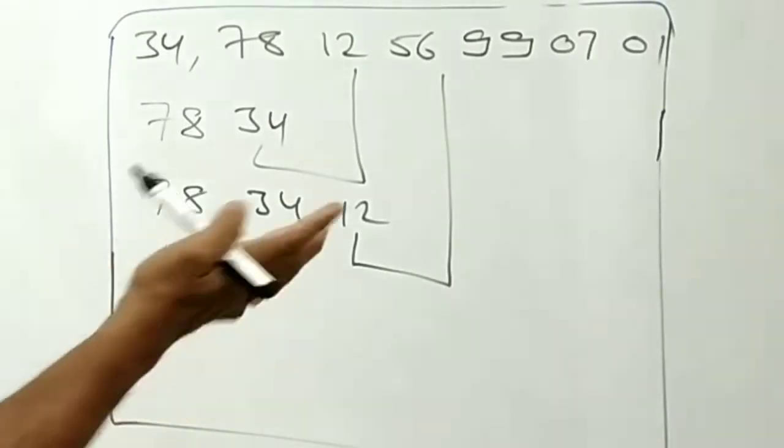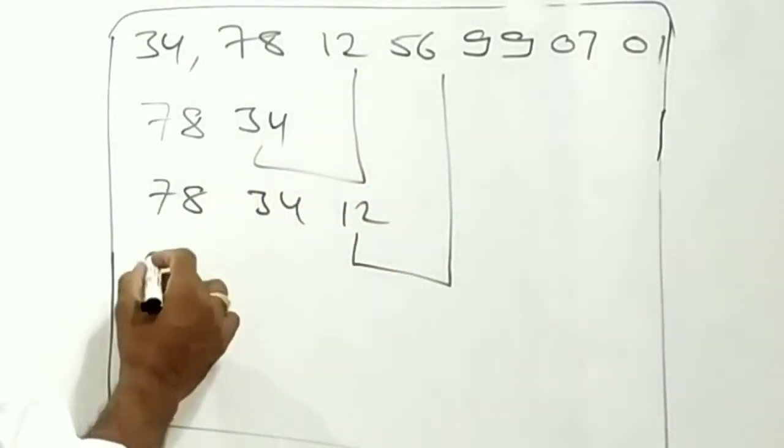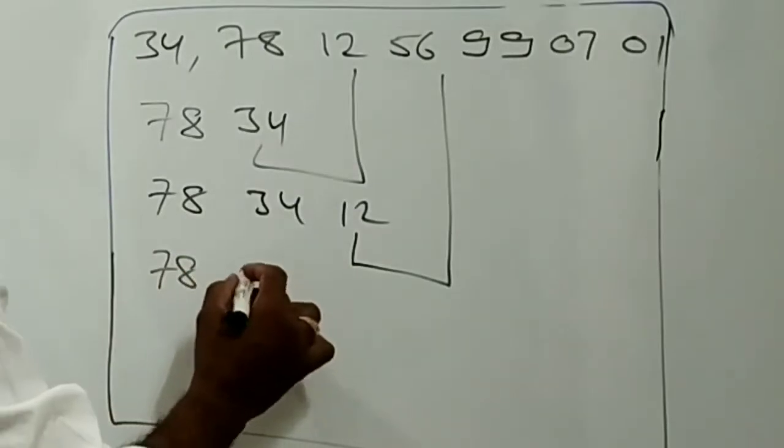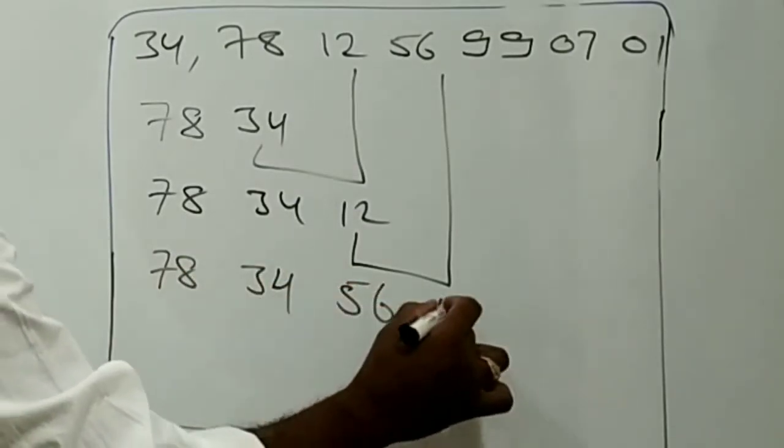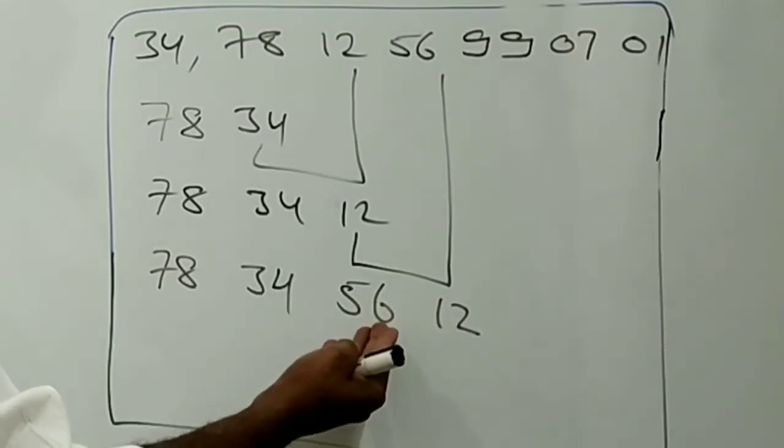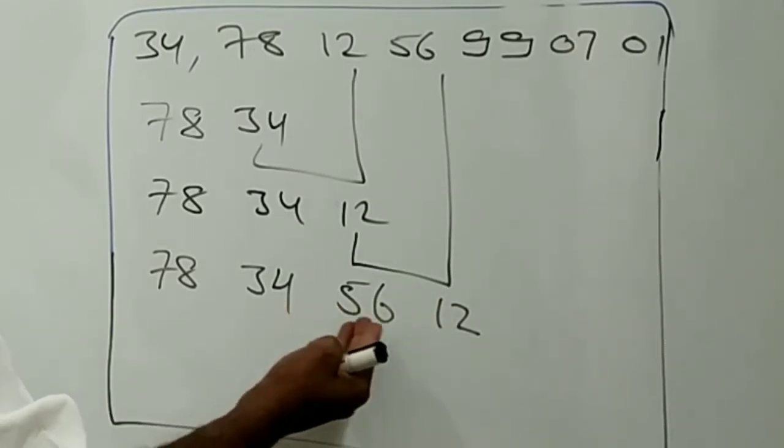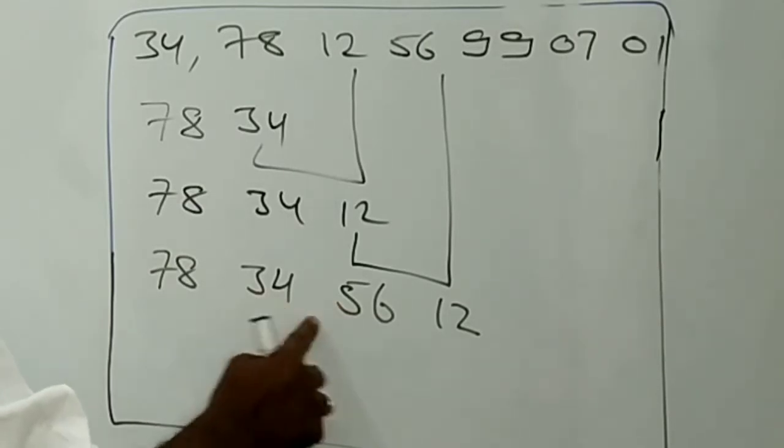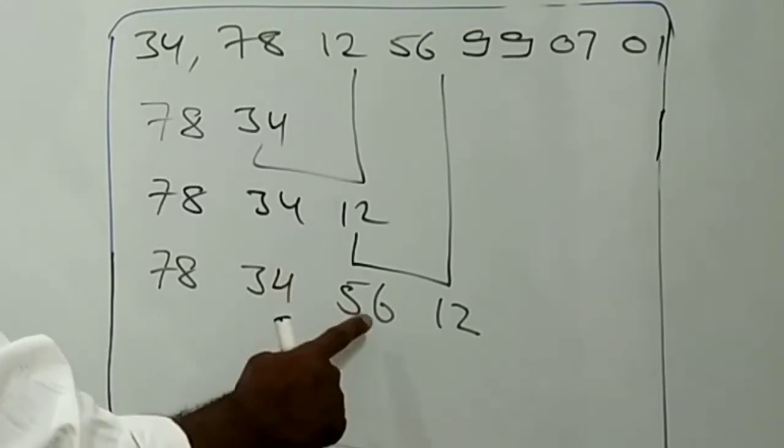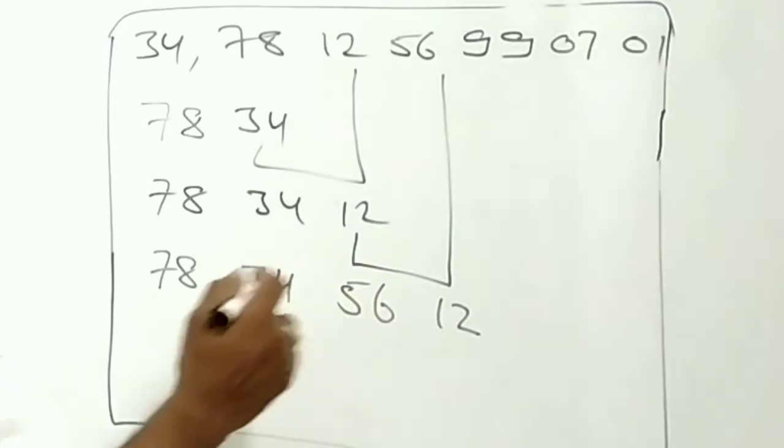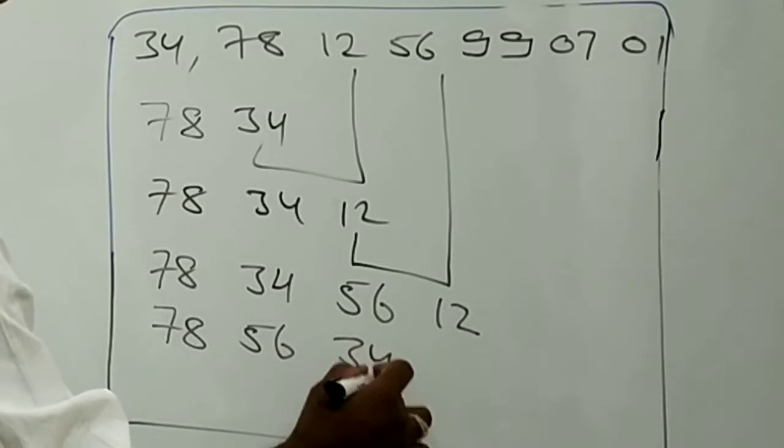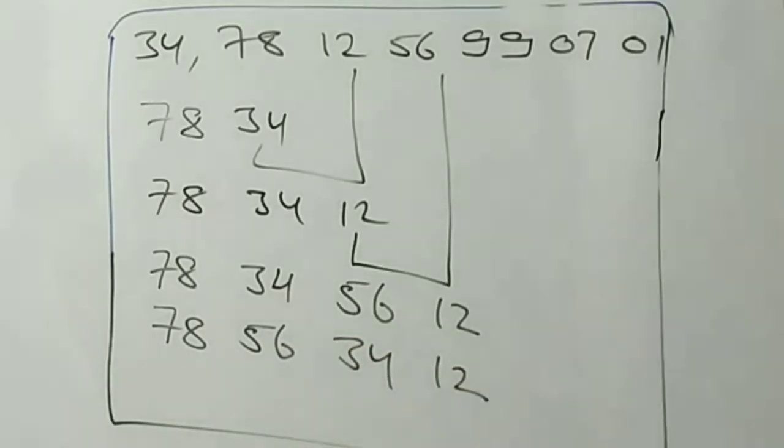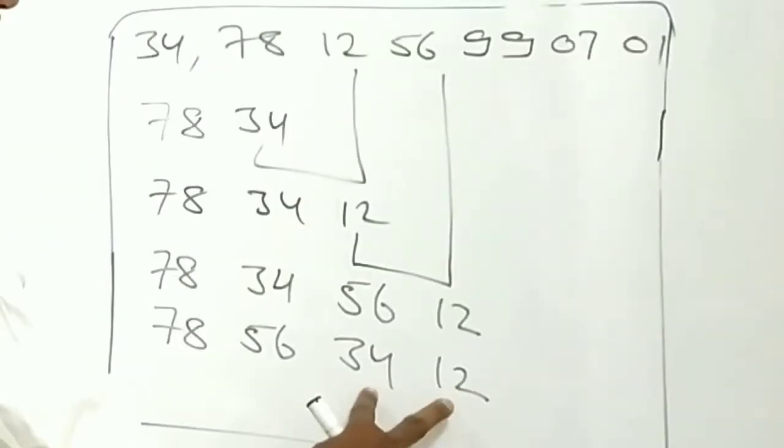Now this 12 will again be in comparison with next number 56. They are actually in ascending order, I need to exchange them. So it will become 78, 34, here I will get 56 and here I will get 12. But after this step again I have to check whether these two numbers are in descending order or not. They are not in descending order, 34 is a smaller number than 56. So let us exchange them. So this will become 78, 56, 34, then next 12 comes. Like that we have to exchange the numbers if the numbers are not in descending order.